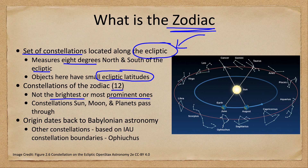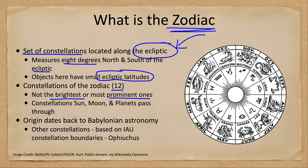We can see them here on this older chart showing the various different constellations and roughly the months through which they would occur. The Sun, Moon, and planets would then pass through these over the course of the year.